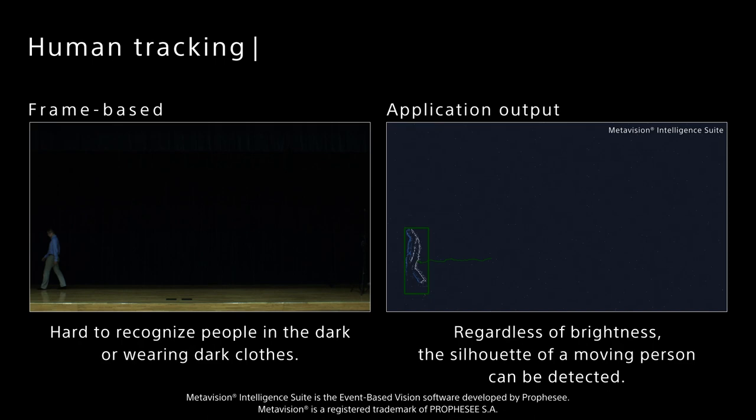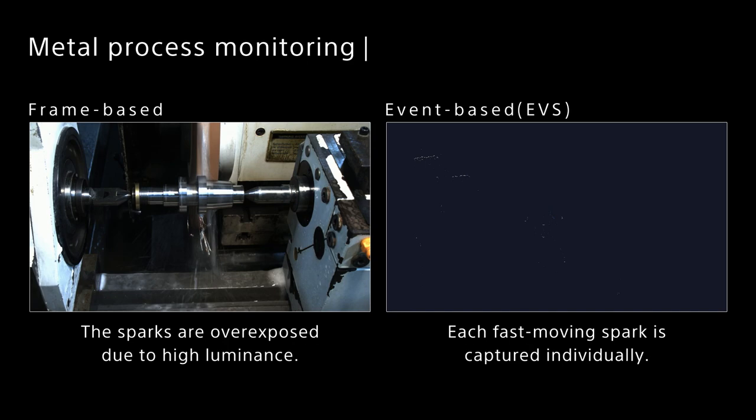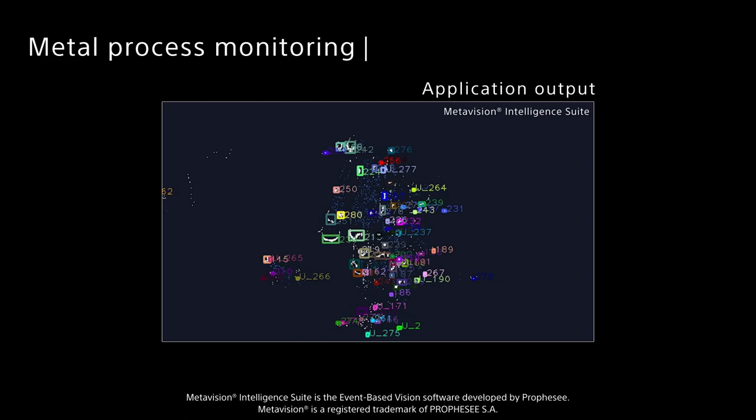Metal process monitoring. By the event-based vision sensor, each fast-moving spark is captured individually. Other than sparks or spinning equipment, data such as stationary jigs are not output. EVS facilitates data analysis of machining conditions.